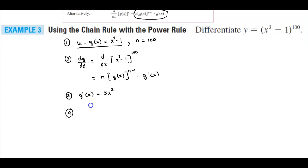And now we're going to plug it into this form here. So we have dy over dx. And that's going to equal the value of n, which we know is 100 times g of x, which we know is x cubed minus 1 to the power of n, which is 100 minus 1 times the derivative of g of x, which we found to be 3x squared.